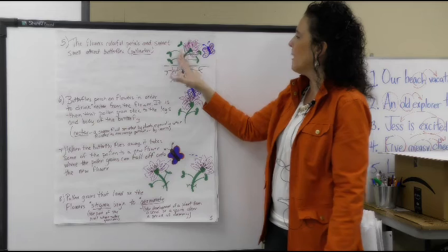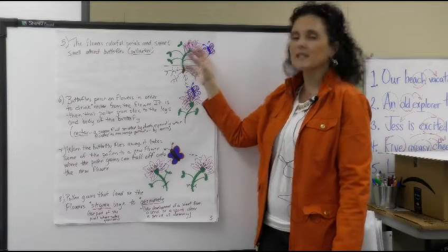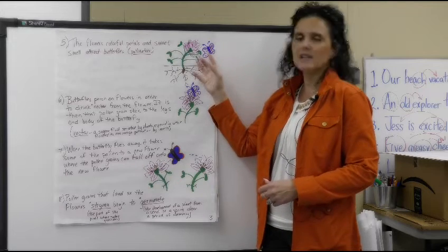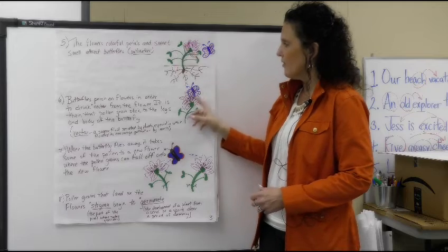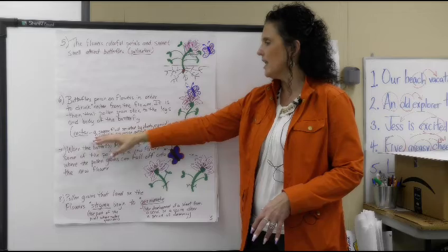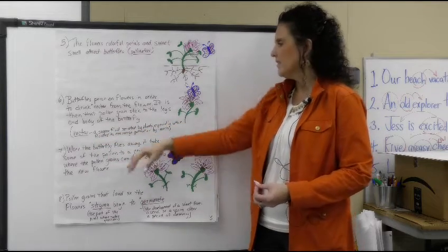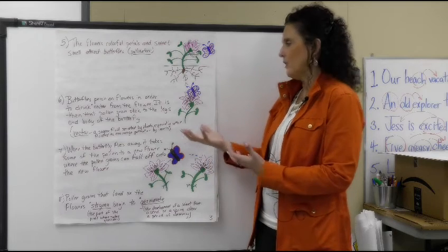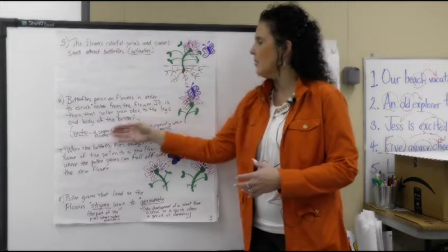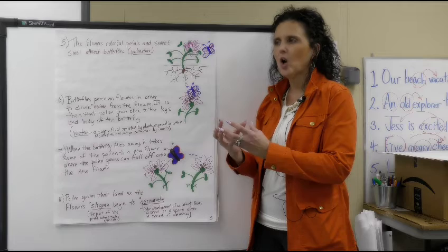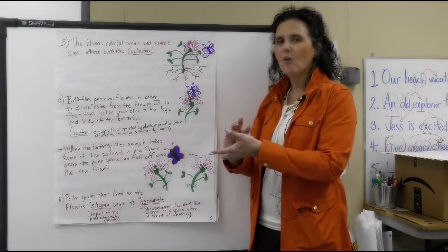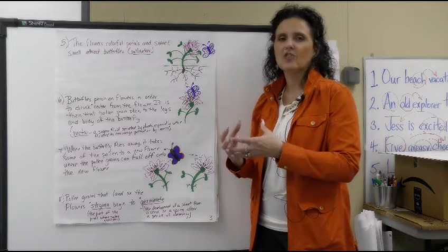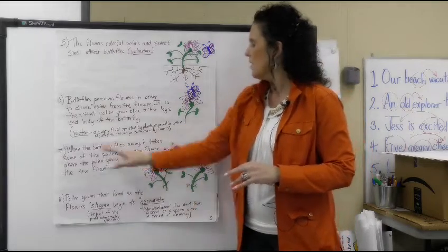Step five, we have all of these colorful petals that start to form on the flower. That sweet smell from those flowers attracts things like pollinators — in this instance, a butterfly that senses that smell and comes to the flower. They perch up on the flower and drink from the nectar, which is just a sugary fluid secreted by these plants to attract those pollinators. If you look at a pollen grain under a microscope, it looks like a spiked ball — it's round with little spikes all over it. That's why it sticks to the butterfly, and why it irritates your nasal passages if you have allergies.